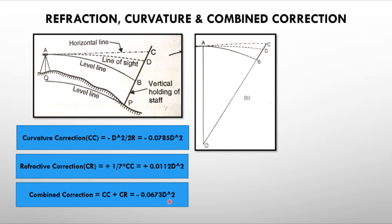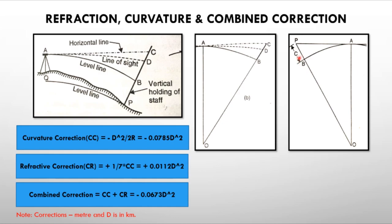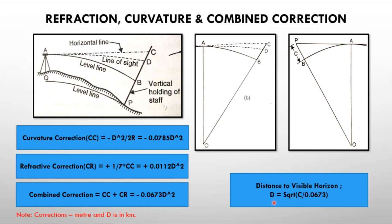The combined correction formula is −0.0673d² meters, where d is in kilometers. This formula is used for the distance to the visible horizon. For example, if we know the height of a lighthouse (about 80 meters), we can find how many kilometers away it is visible, using the rearranged formula: d = √(c / 0.0673), where c is in meters and d is in kilometers.